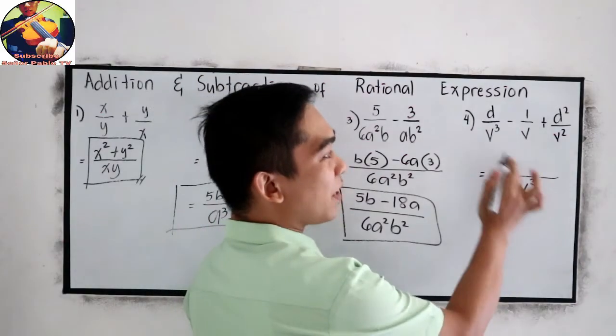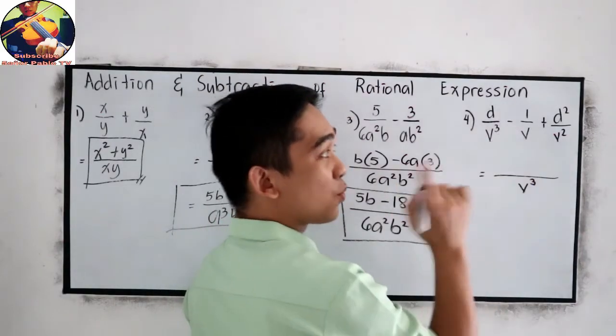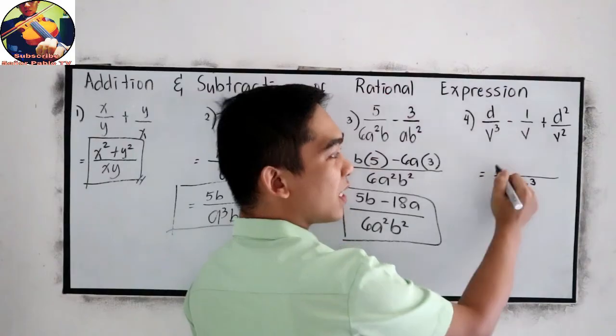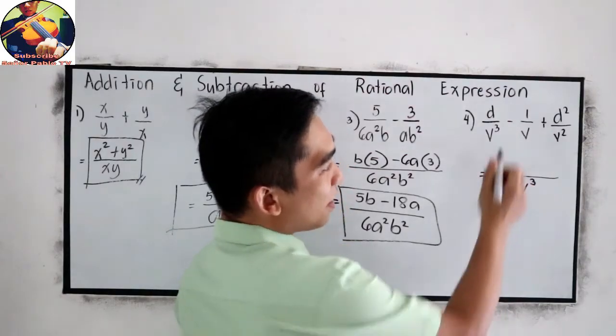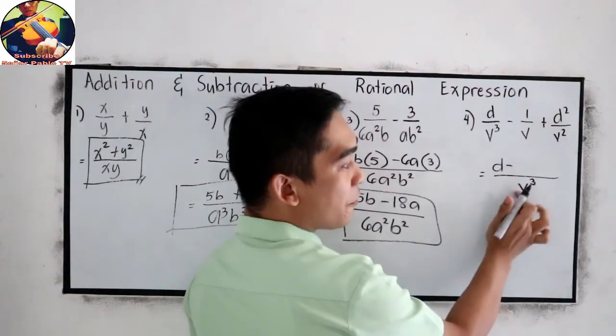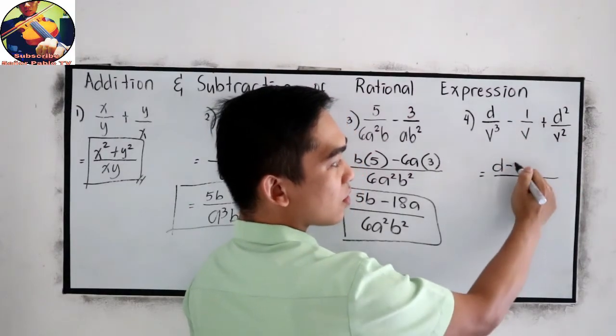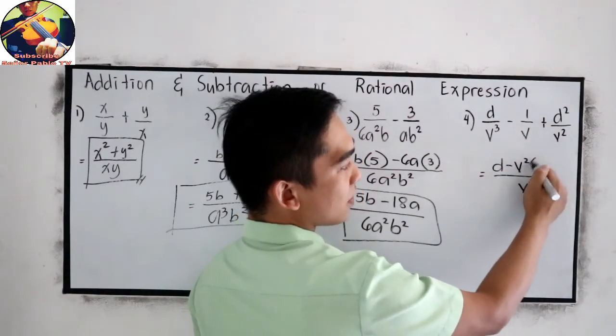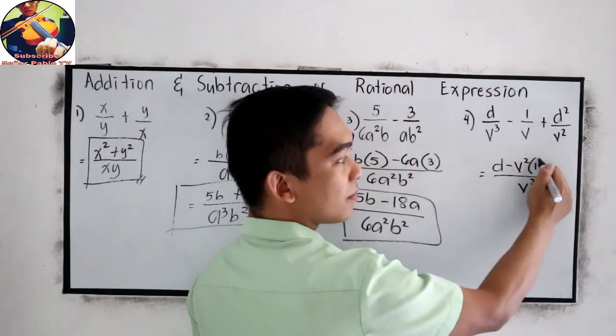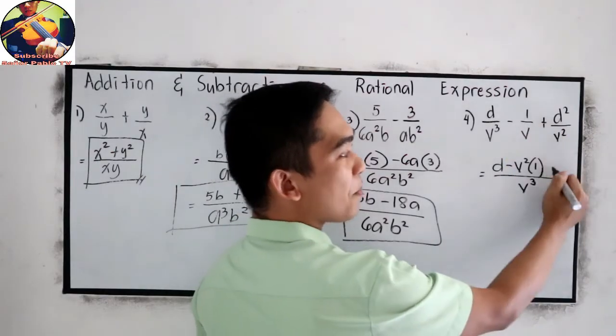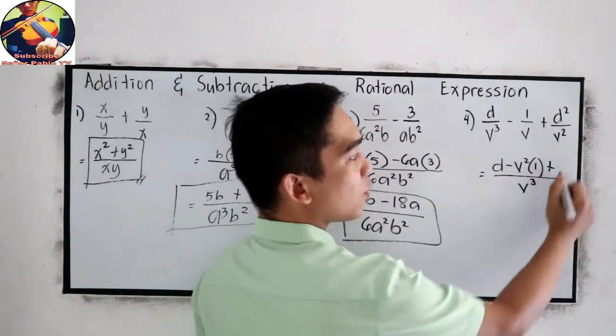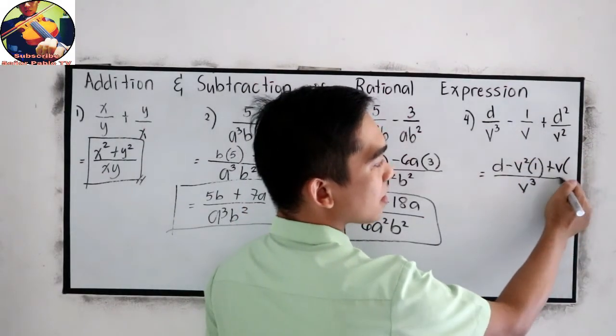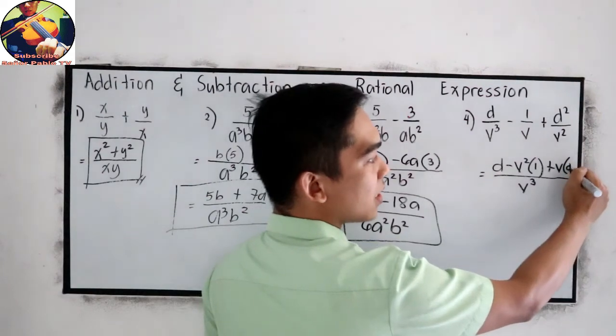Now, v cubed divided by v cubed, that is 1. So, 1 times d, we only have d. Minus v cubed divided by v, so we have v squared, times we have 1. Copy plus v cubed divided by v squared, we have v, times our numerator, d squared.